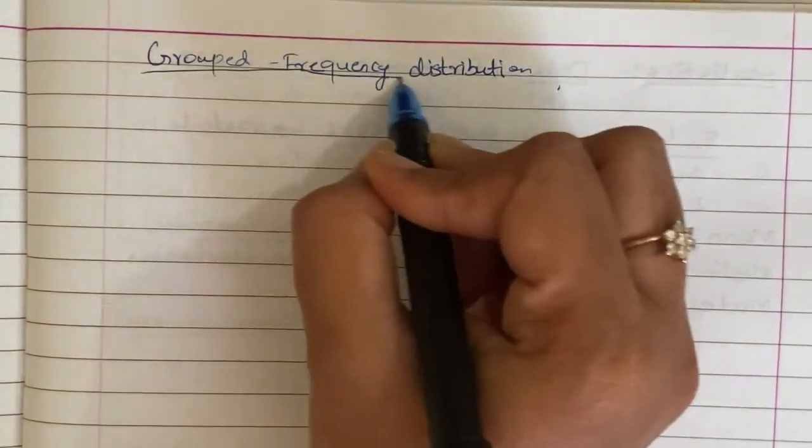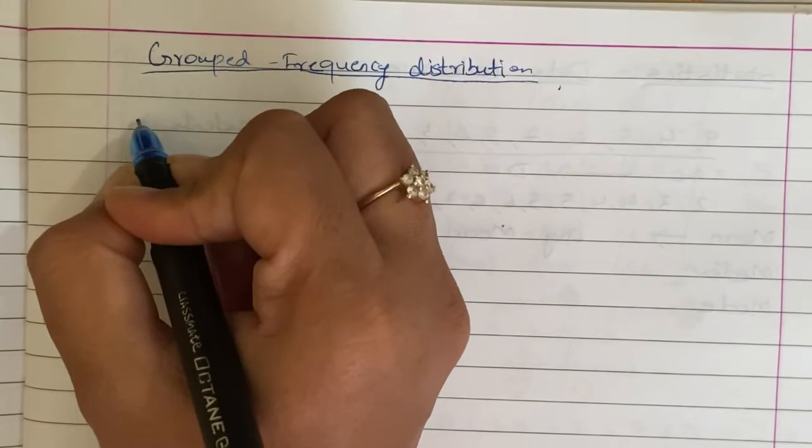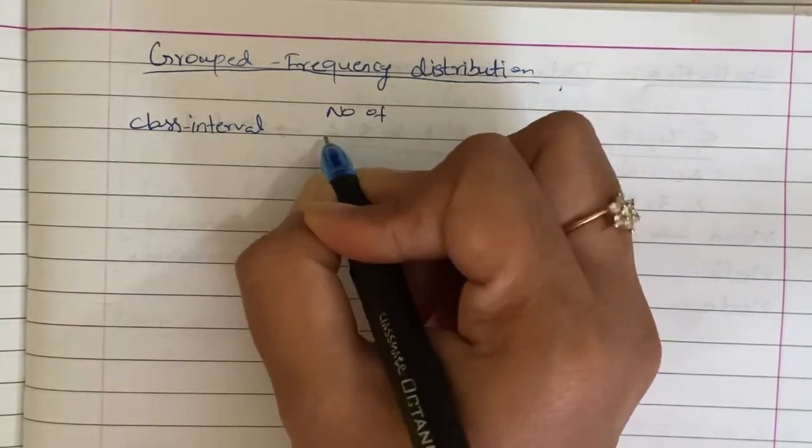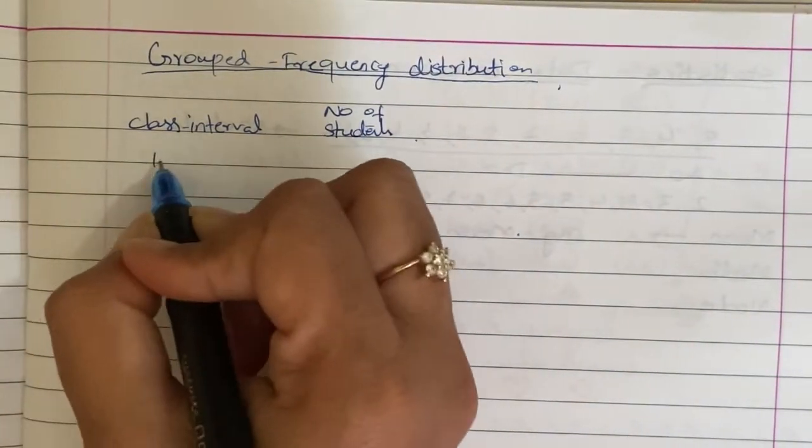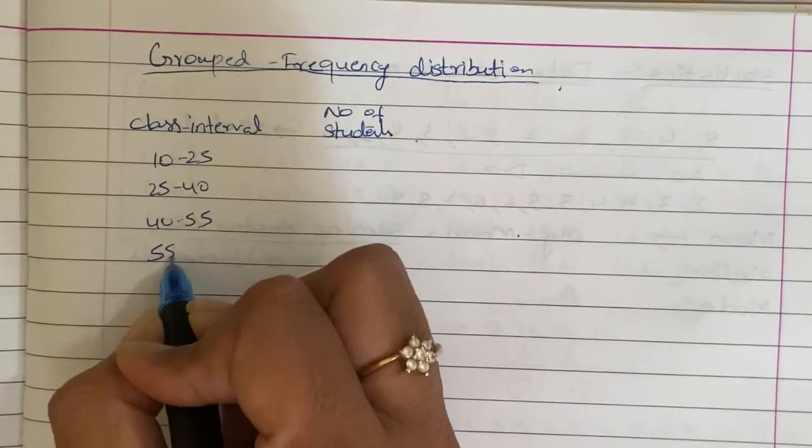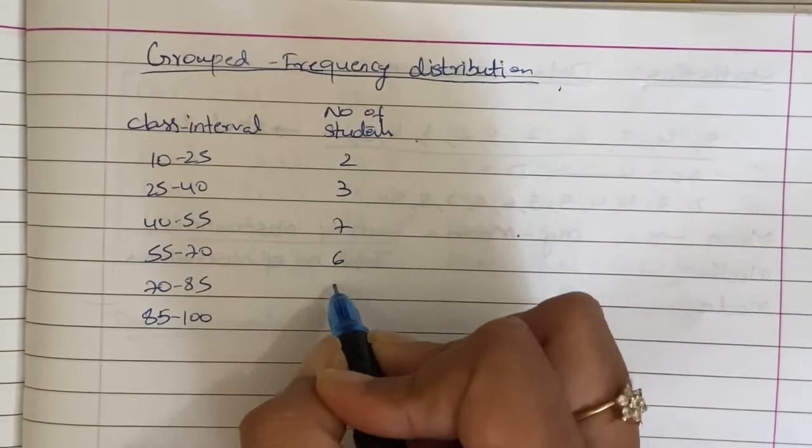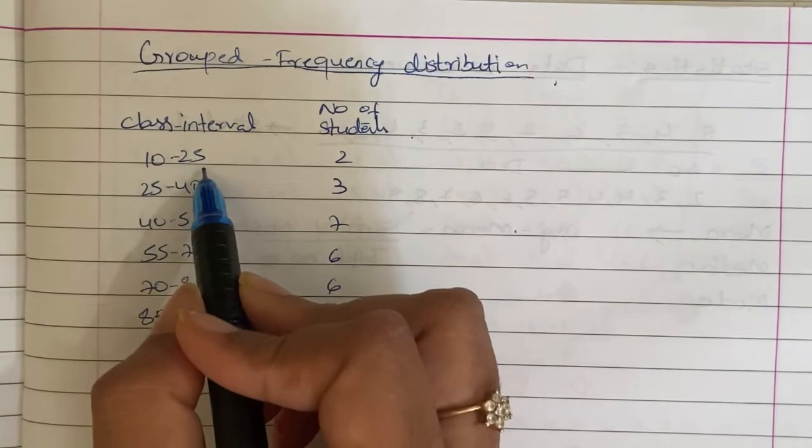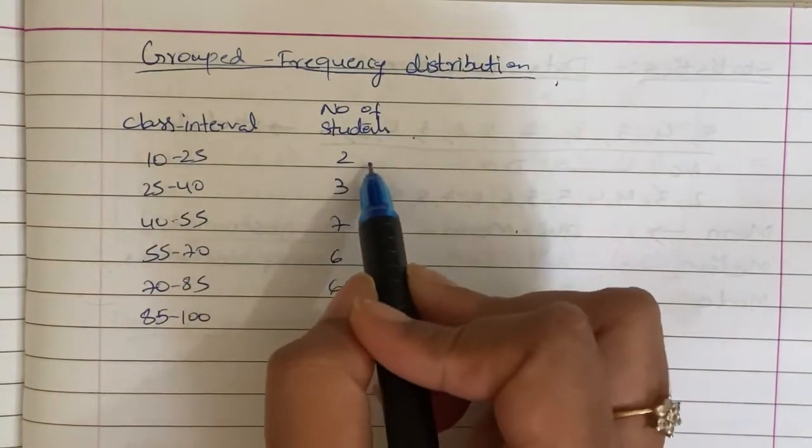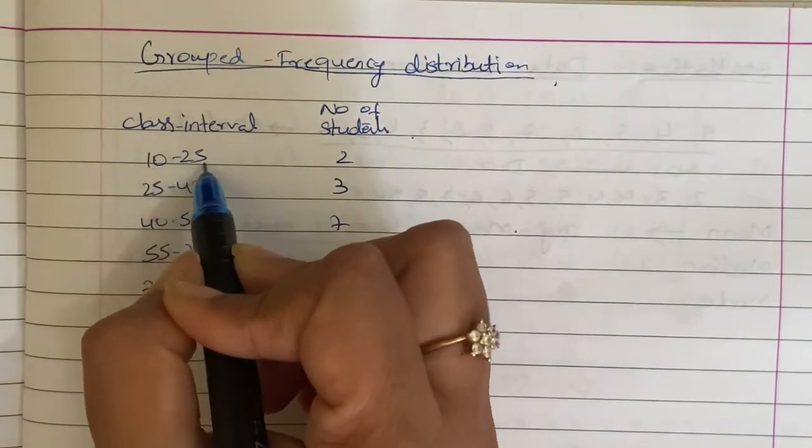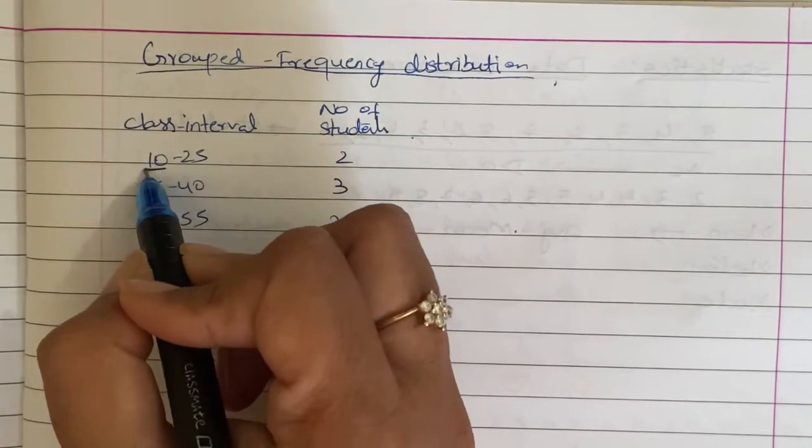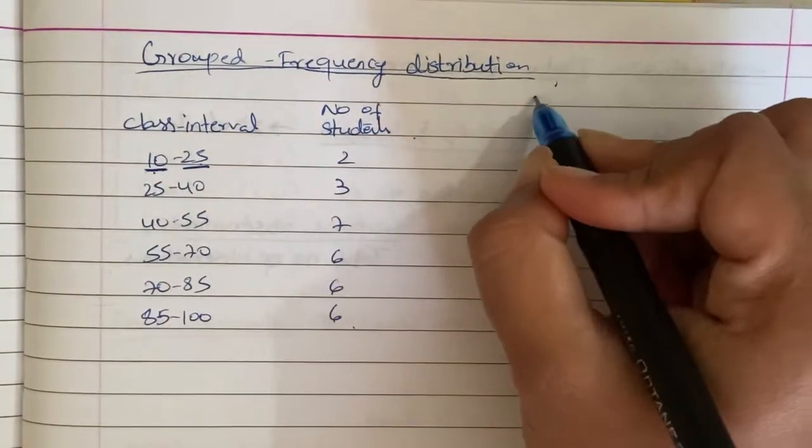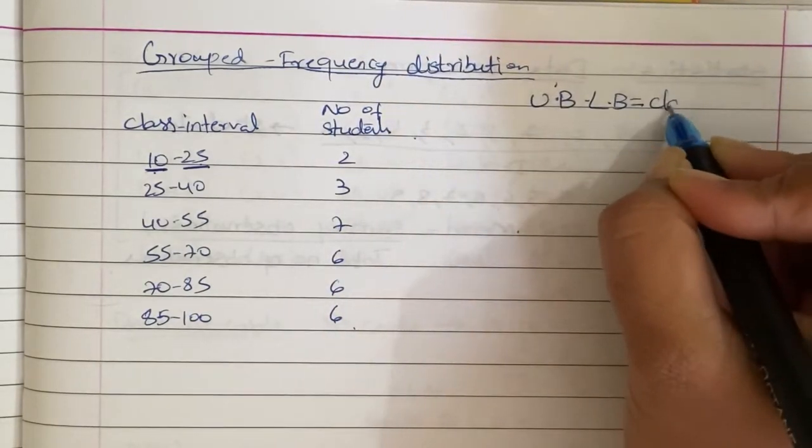So what is grouped frequency distribution? 10 to 25. So this is the grouped frequency distribution. These are the marks obtained and number of students. In this case, the name is class interval. So this is the lower boundary, this is the upper boundary of the class interval. Upper boundary minus lower boundary is nothing but class length.